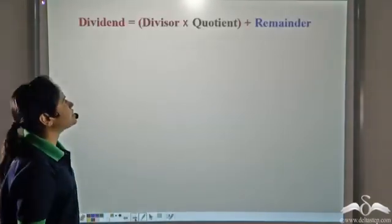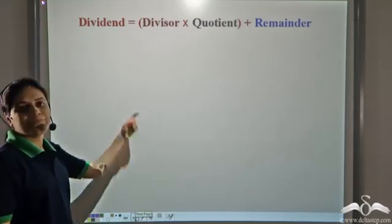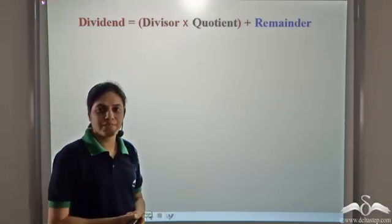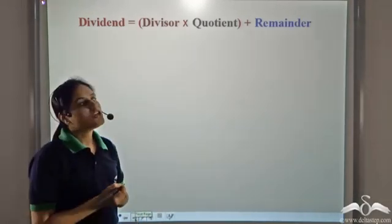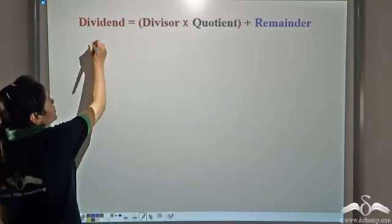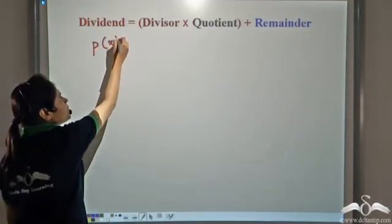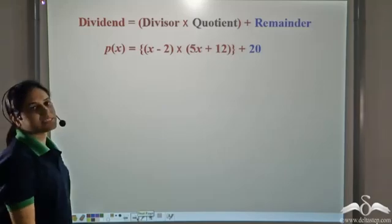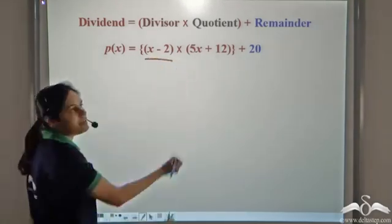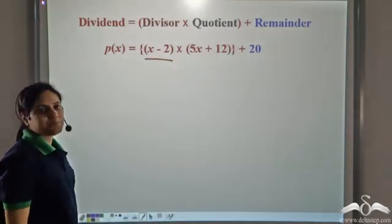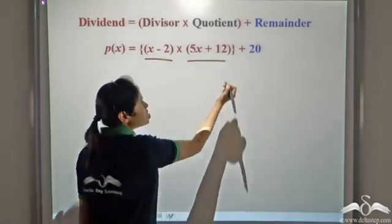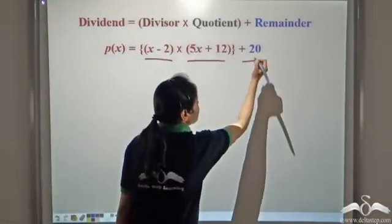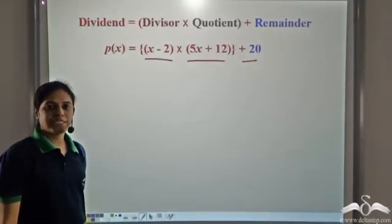We have already learnt this identity: dividend is equal to divisor into quotient plus remainder. So let us denote our dividend as P(x). We can write P(x) is equal to the divisor, which is x minus 2, into the quotient, which is 5x plus 12, plus the remainder, which is 20.